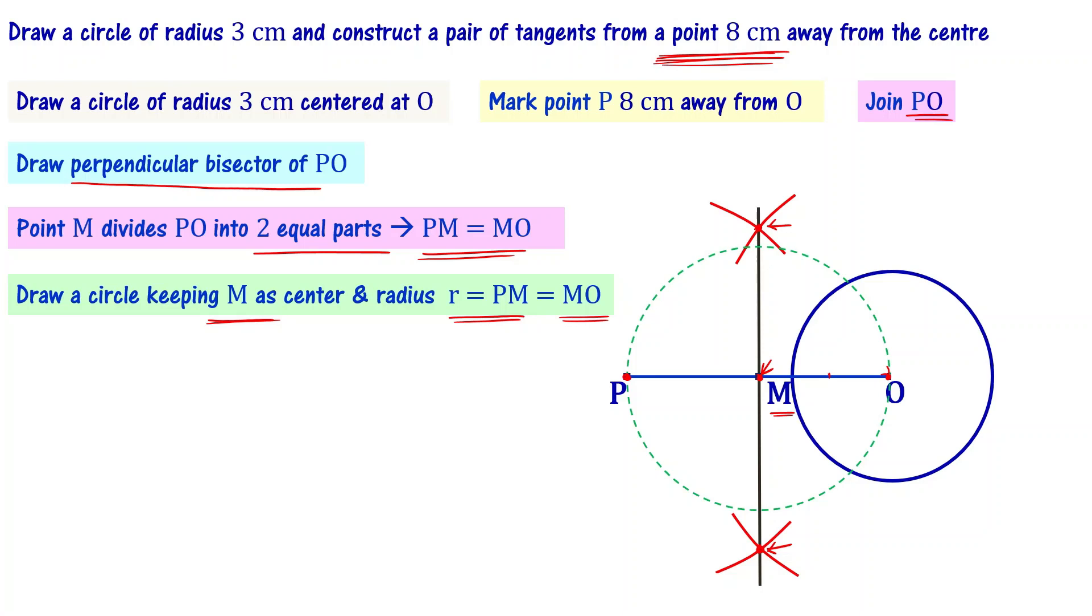This circle is intersecting the original circle at two points. Let's mark them and say that those are A and B, at two points.